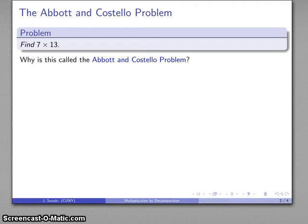And you might wonder why this is called the Abbott and Costello problem. You might want to do a Google search on videos because it gives you one of the very classic demonstrations of what happens when you don't understand what you're doing when you move digits around when you're multiplying.